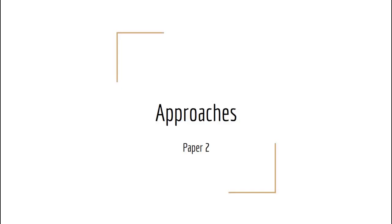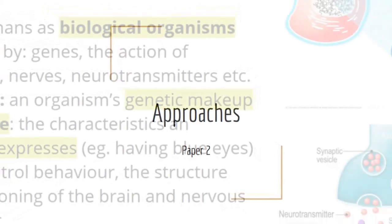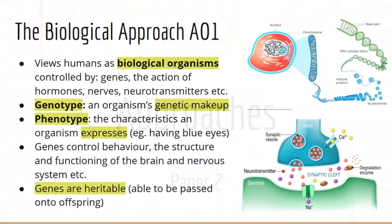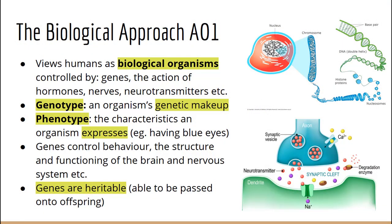The biological approach views humans as biological organisms. Biological explanations, for example hormones, are given for all aspects of psychological functioning. The biological approach attempts to explain behavior as the direct product of interactions within the body. Genes code for characteristics such as eye color, but also for the structure and functioning of the nervous system.